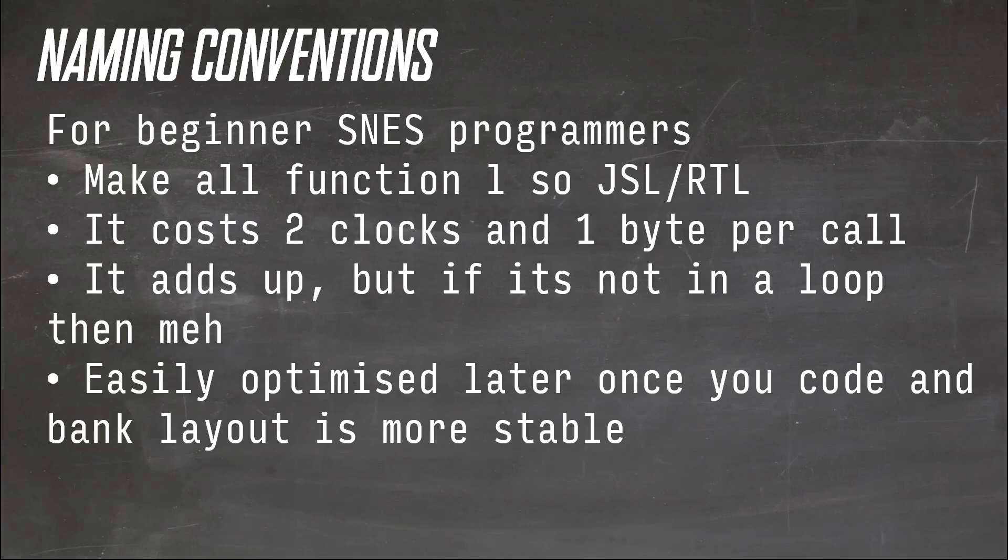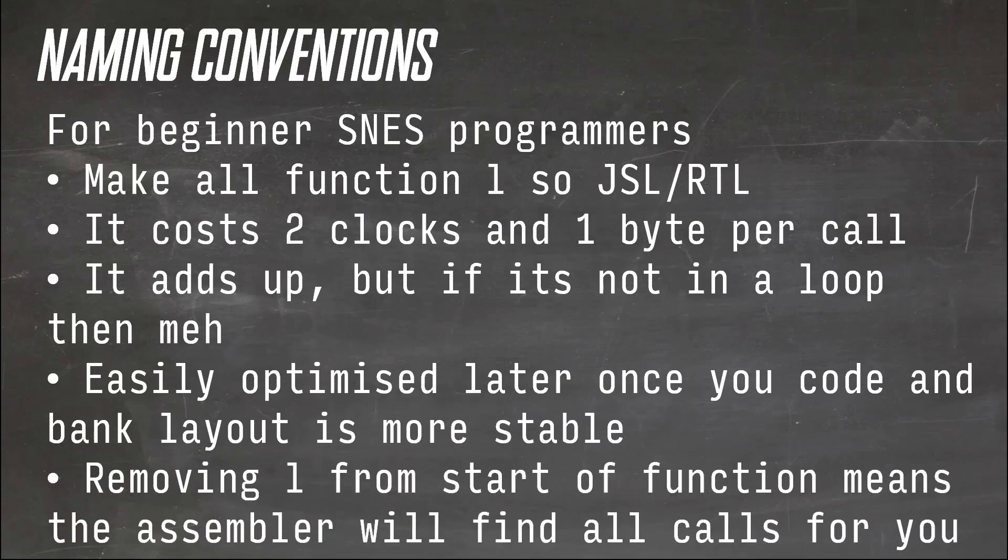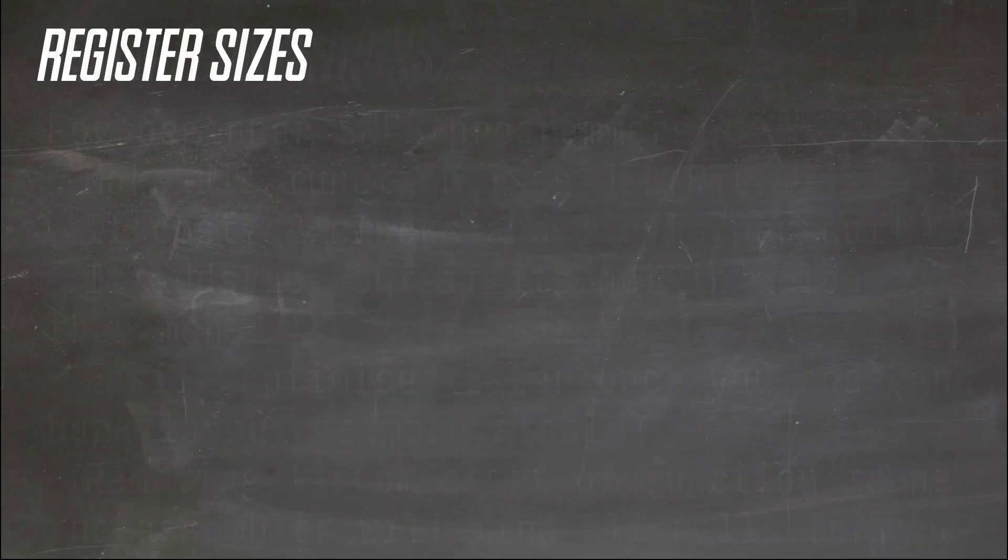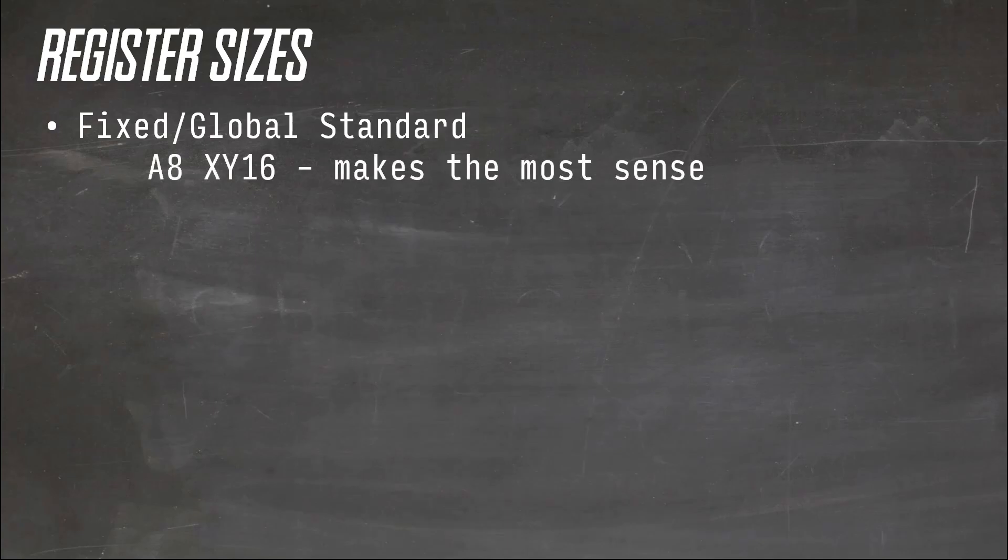How to deal with AXY sizes. Basically, two methods. Global standard, i.e. A is 8 and XY is 16, and that is how it is to be. This keeps it simple. If you ever change from A8 XY16, then you restore back to the A8 XY16. This does get a little wasteful at times, but it keeps it simple, and you follow the rule and you mostly won't have any issues.